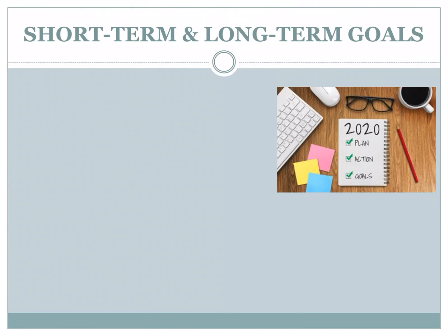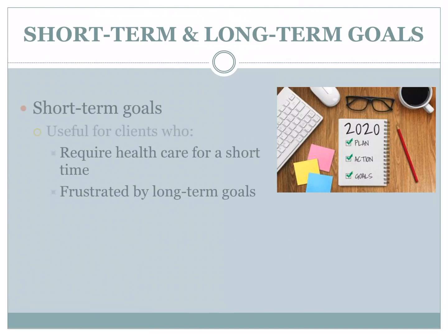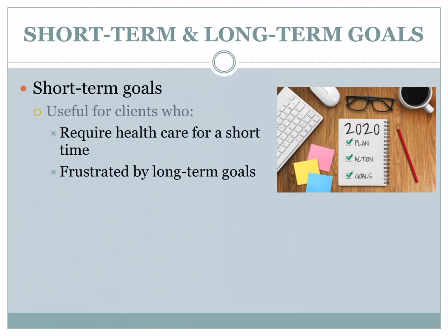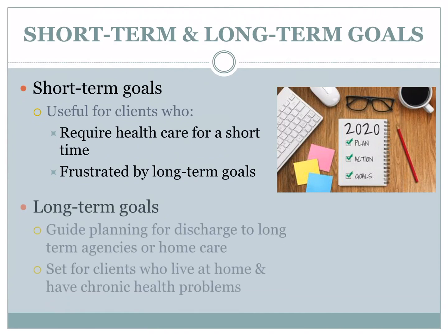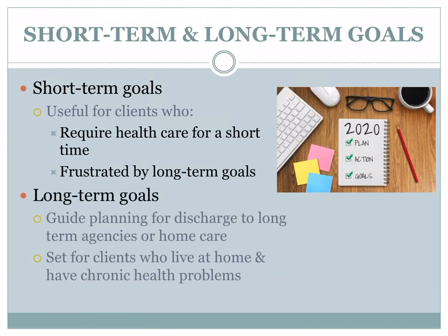There are two types of goals: short-term and long-term. Short-term goals are useful for clients who require health care for a short time and may be frustrated by long-term goals. Long-term goals guide planning for discharge to long-term agencies or home care, and are also set for clients who live at home and have chronic health problems.